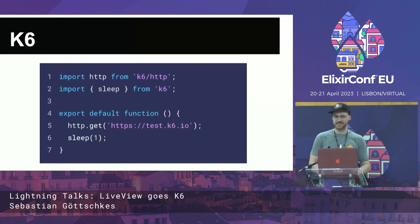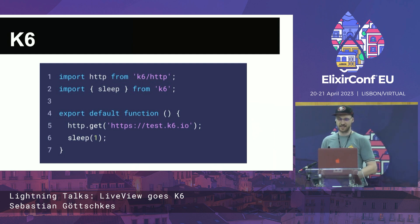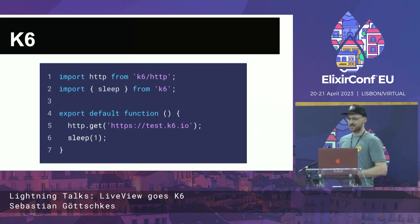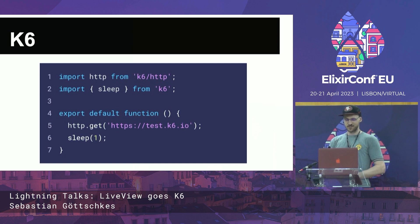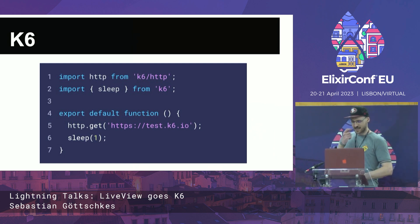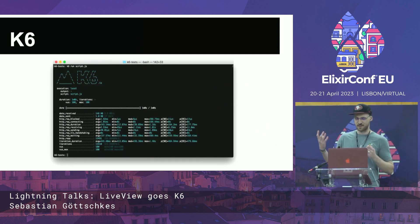K6 is a load testing tool. What you can do is implement HTTP GET requests — and as you can see here, K6 is written in JavaScript, so you need to write some JavaScript. In this case, you implement an HTTP GET and then you sleep. When you execute K6, what you get back is a very fancy summary of how the load test went.